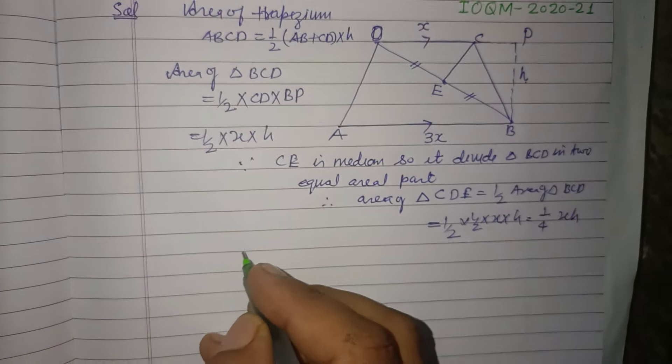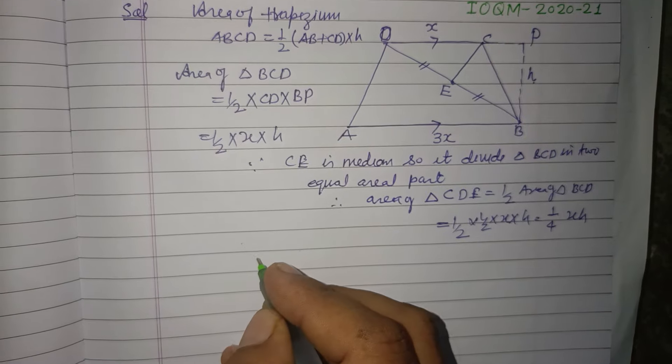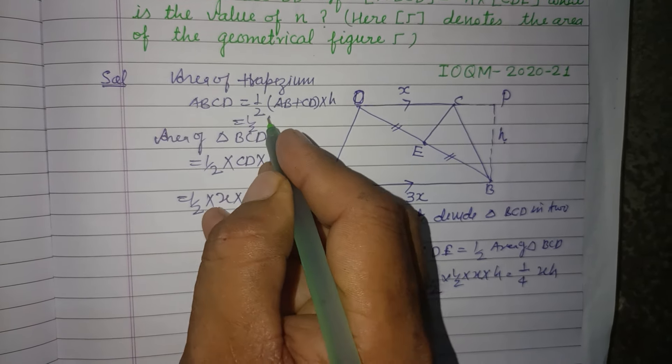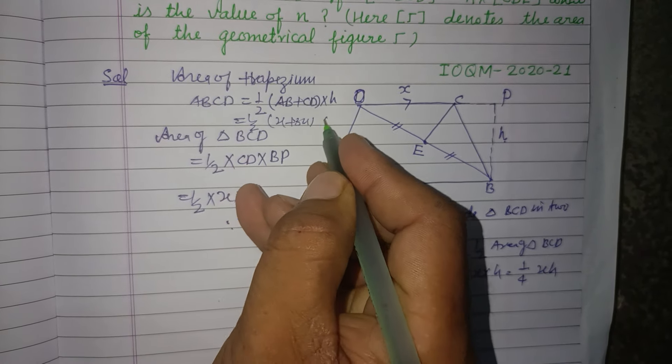Now, area of trapezium ABCD is half of x plus 3x into h.